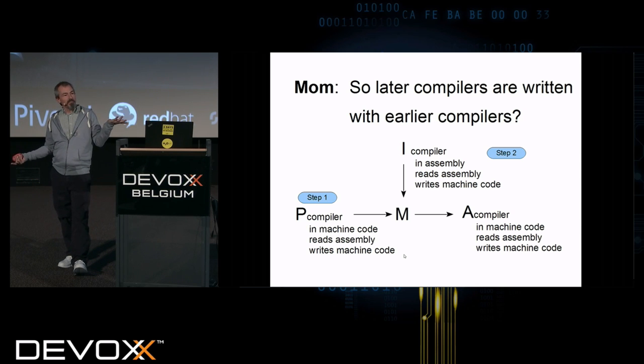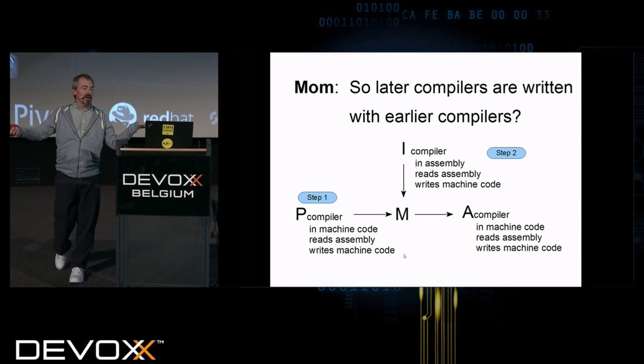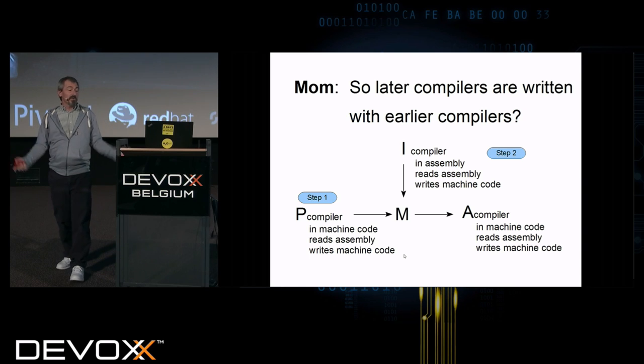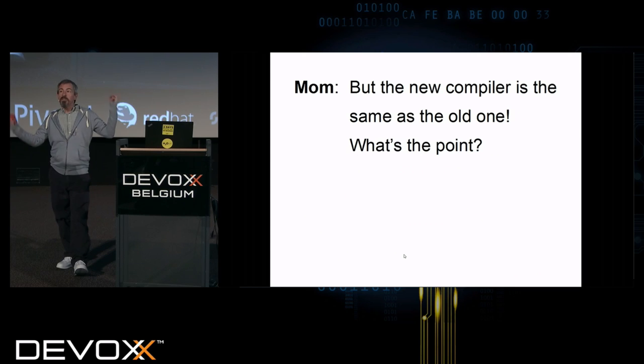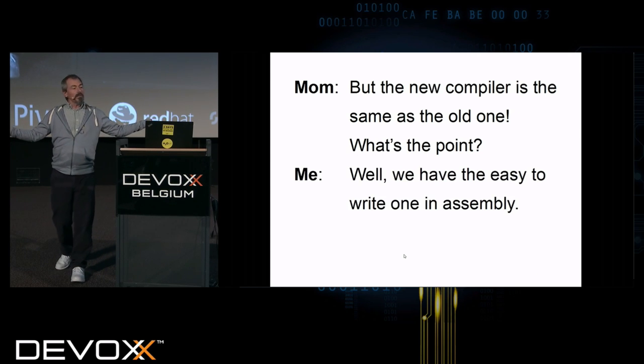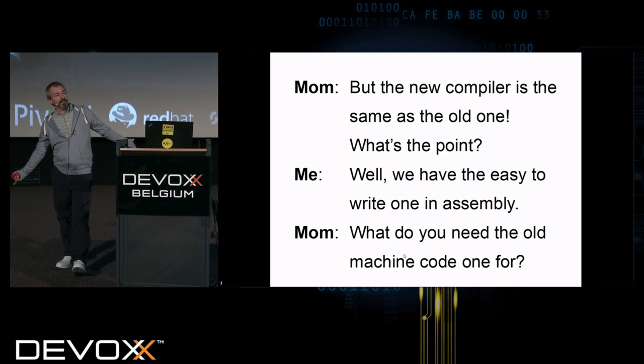So in step two, this same person wrote compiler in assembly, which reads assembly and writes machine code. And the answer is a compiler that's in machine code, which reads assembly and writes machine code. That's assembler. The first one is hard to write because you write in machine code. And the second one's a lot easier. But the new compiler is the same as the old one. What was the point?